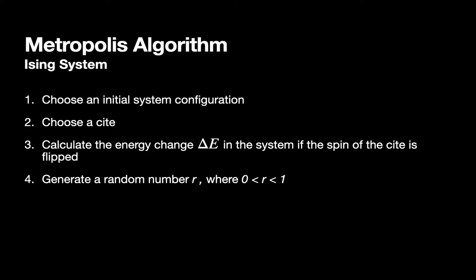Next, we will generate a random number between 0 and 1, and if the random number is smaller than the Boltzmann factor, then we would accept the change to the system. Otherwise, we would reject it.